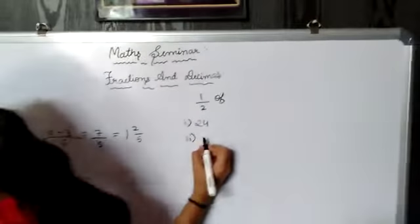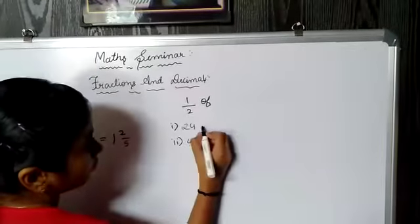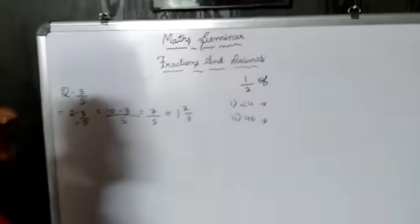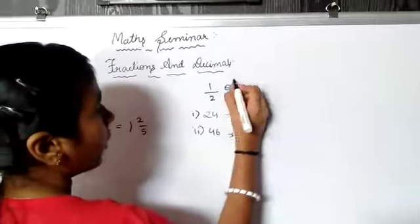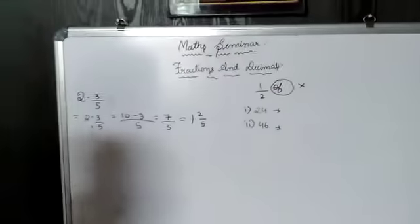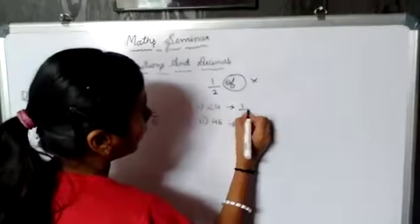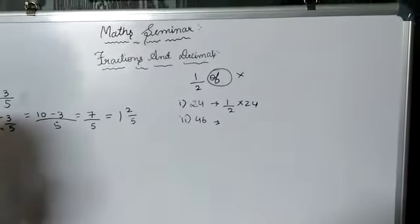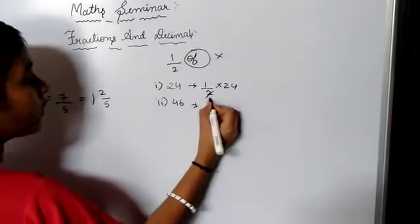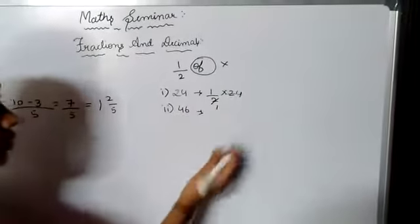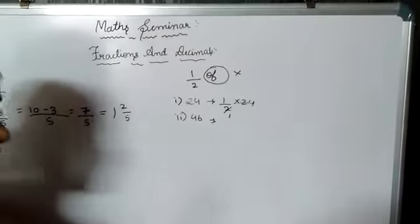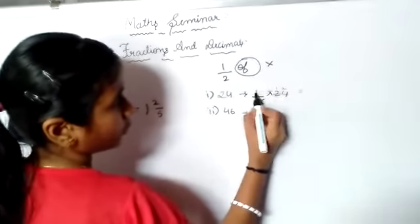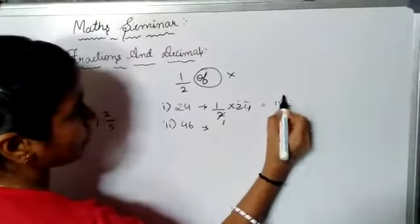The second number is 46. So we have to solve these. 'Of' means nothing but 'into.' So we have to do 1 upon 2 into 24. There is a simple method to cancel. We can cancel 2 into 24: 2 ones are 2, 2 twos are 4, so 12 ones are 12. The answer will be 12.